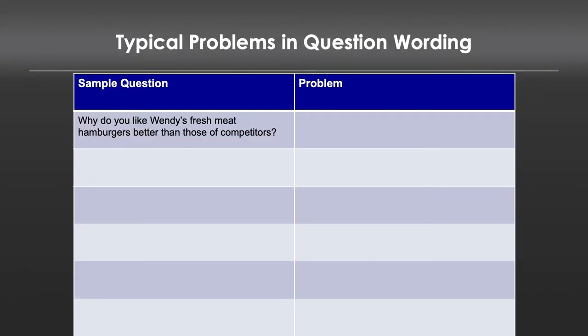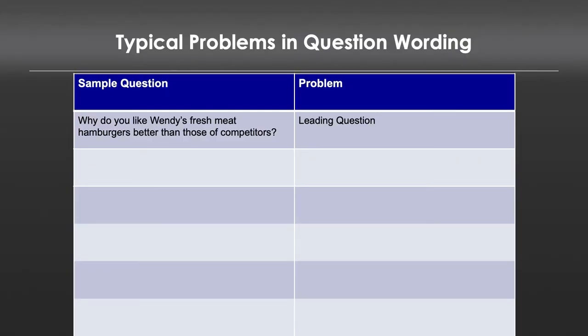There's also a myriad of problems with the way questions are worded. Our first example: 'Why do you like Wendy's fresh meat hamburgers better than those of competitors?' This is a classic leading question — you're telling people the answer you'd like to get before you actually ask the question. When you say 'why do you think it's better,' the implication is that it is better. Instead, remove that and ask: 'Do you believe Wendy's hamburgers are better than competitors?' When you use the leading version, you're susceptible to getting responses that are not true reflections of what people believe.